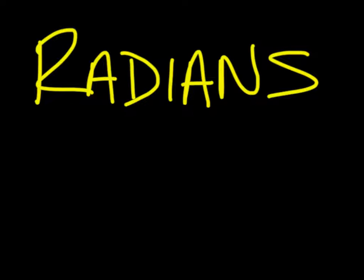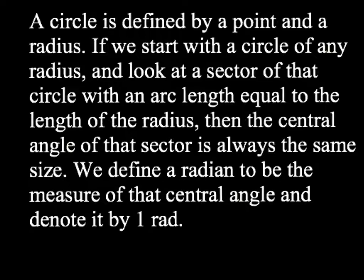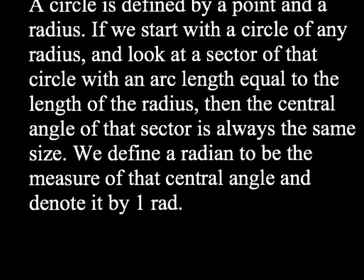The bulk of the lesson today is about radians and the circle. We're going to convert from degrees to radians and radians to degrees, but none of that's going to make any sense if you don't know what a radian actually is. A circle is defined by a point and a radius. If we start with a circle of any radius and look at a sector with an arc length equal to the length of the radius, then the central angle of that sector is always the same size. We define a radian to be the measure of that central angle — one rad, or one radian.